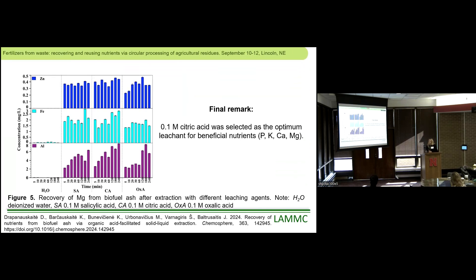During this work, we also wanted to see how these acids extract the heavy metals, which biofuel ash is rich in. Most heavy metals were close to zero or below the limit of detection — just zinc, iron, and aluminum were measurable after extraction in the liquid phase, and the concentrations were not high. From this work, we found that citric acid was selected as optimal for extracting beneficial nutrients altogether without releasing high contents of heavy metals into the solution.